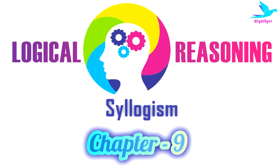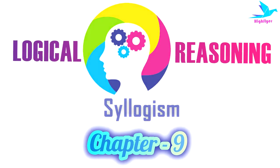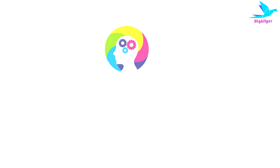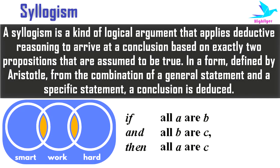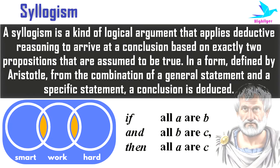Syllogism is our next chapter for logical reasoning. A syllogism is a kind of logical argument that applies deductive reasoning to arrive at a conclusion based on exactly two propositions that are assumed to be true. In a form defined by Aristotle, from the combination of a general statement and a specific statement, a conclusion is deduced.